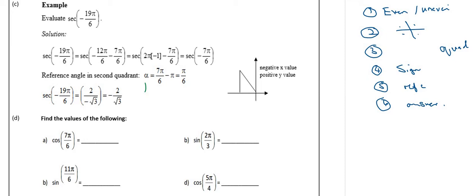If I have 12π/6, that will give us 2π, and 2π is 360 degrees. So if I have 19, it definitely means I have a revolution. So my first step if I want to do these is to check if the function is even or uneven.